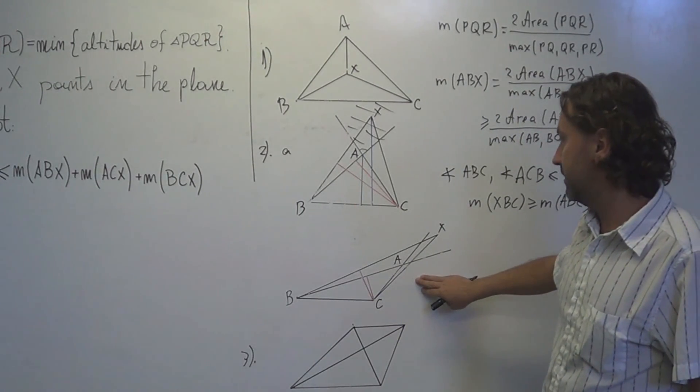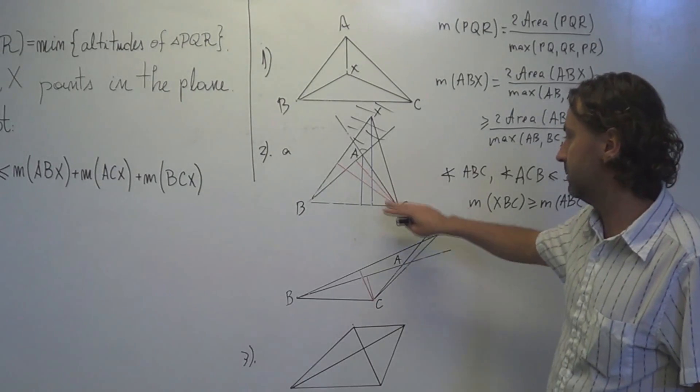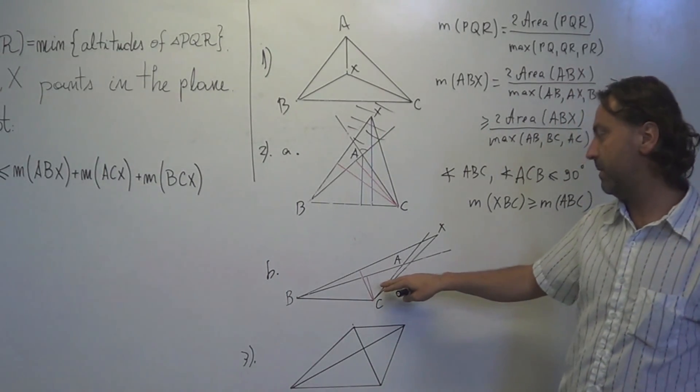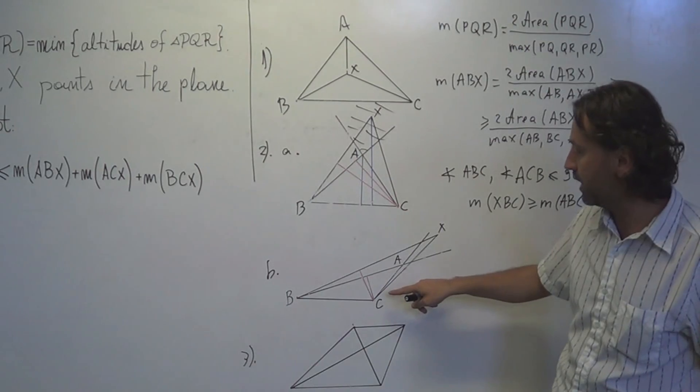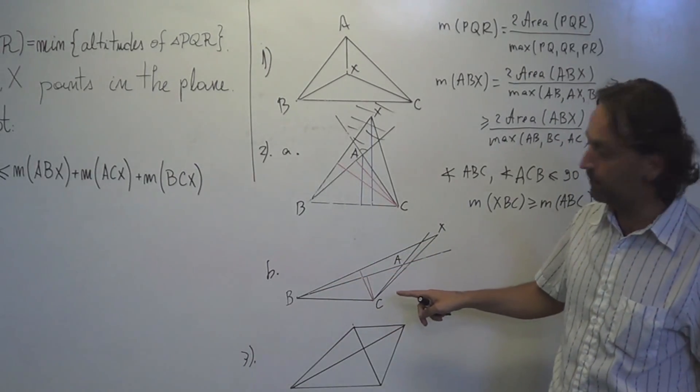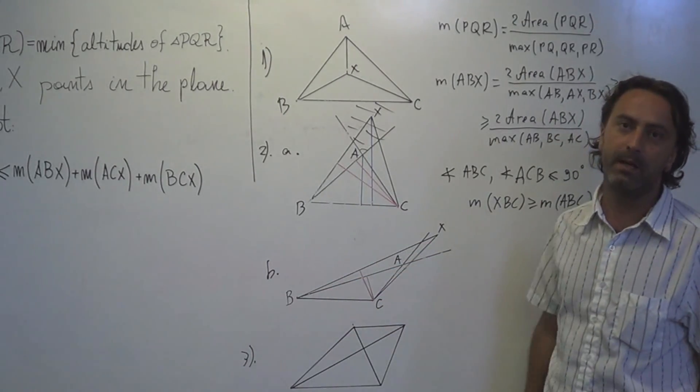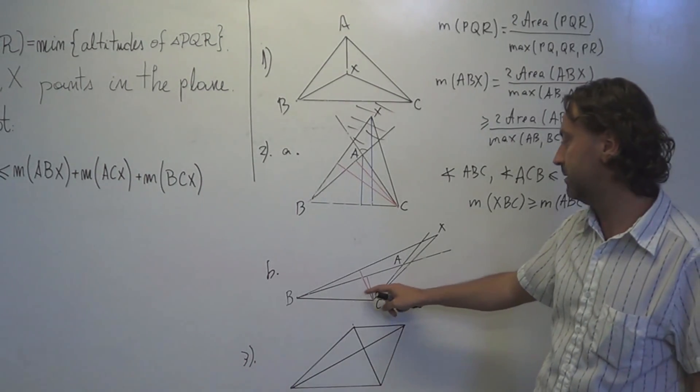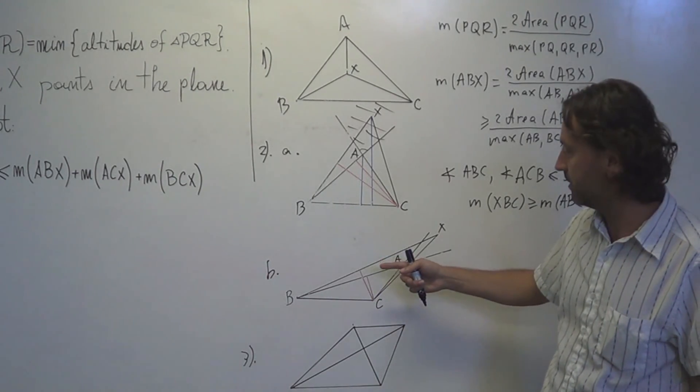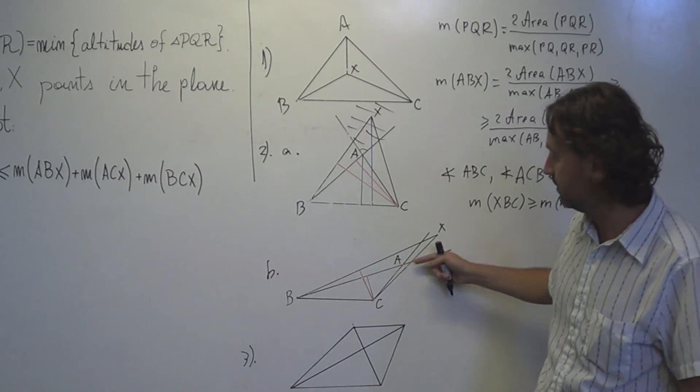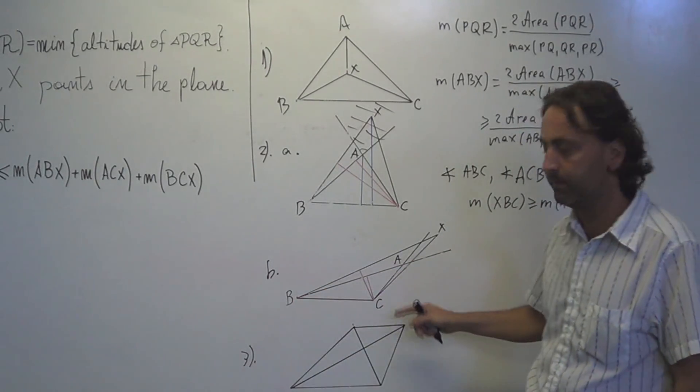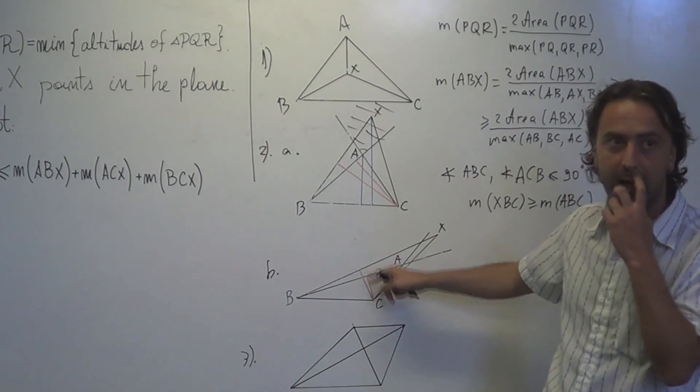In this case, if one angle is bigger than pi over 2, then it is possible that there is one height of ABC which is bigger than one height of XBC. But the point here is that that height will not be the minimum height. Because if this angle is larger than pi over 2, then the maximum side of the triangle will be the opposite. It will be AB is the largest side of ABC.